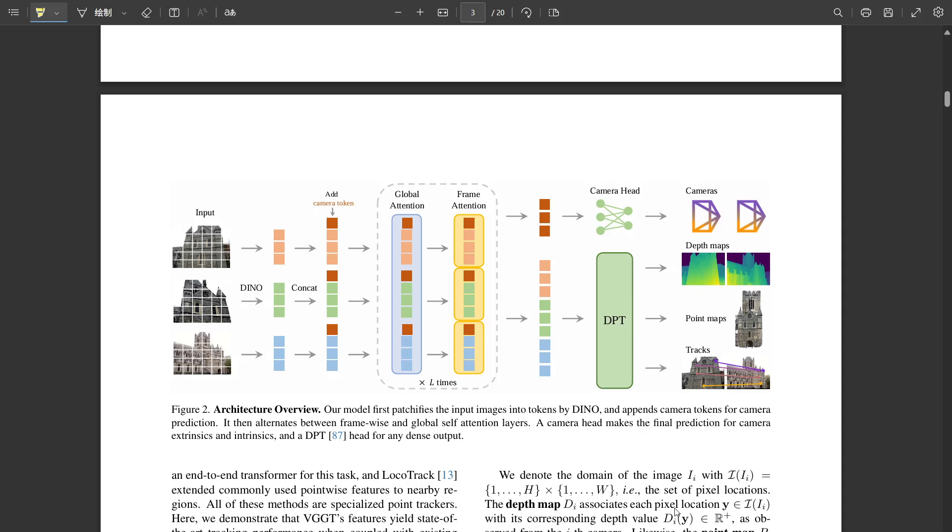Okay, so the backbone processes everything with this alternating attention. Then how do we get the actual outputs, like cameras and depth? That's where the prediction heads come in. Specific output tokens from the transformer backbone are fed into different smaller networks or layers, the heads, each designed to predict a specific thing—like specialized tools. Kind of. First, there's a camera head. It takes certain tokens and predicts the intrinsics—focal length, stuff like that—and the extrinsics, the 3D position and rotation for every single input camera. And they do something clever with setting the coordinate system, right? Yeah, they anchor the whole 3D coordinate frame to the very first camera in the input sequence. They use some special learnable tokens to help the network establish this consistent frame. Got it. First camera is the origin.